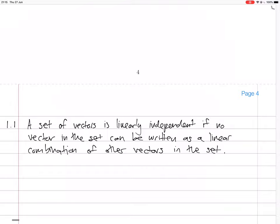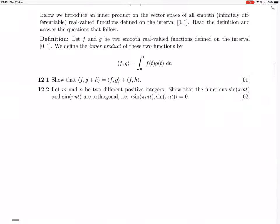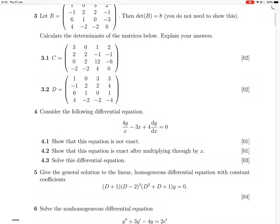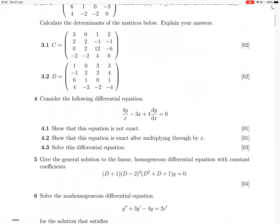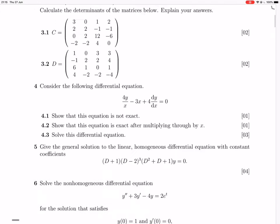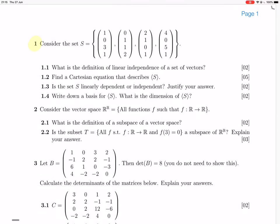So now 1.2: Find a Cartesian equation that describes the set generated by S. So the set generated by S is all the linear combinations, so you'll take a linear combination of those four vectors, and then that can be written as a matrix equation in which you Gauss reduce, try to make one row zero, and that gives you a Cartesian equation.